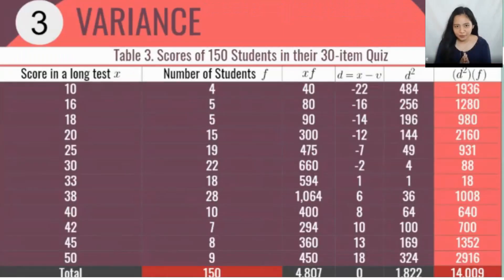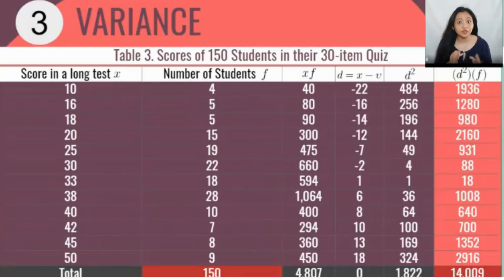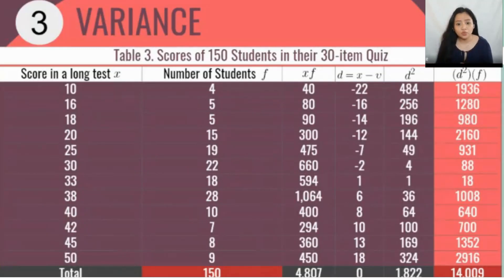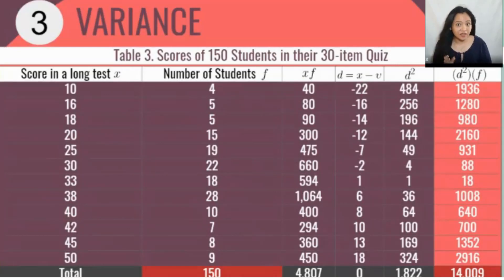Here is how we compute variance. We have scores on a long test denoted as X, number of students as frequency F, and the product XF. For example: 10 times 4 equals 40, 16 times 5 equals 80, 18 times 5 equals 90, and so on up to 50 times 9 which equals 450. The mean is computed as the summation of FX — which is 4,807 — divided by the total number of observations, which is 150.